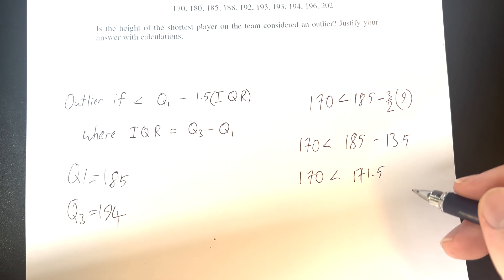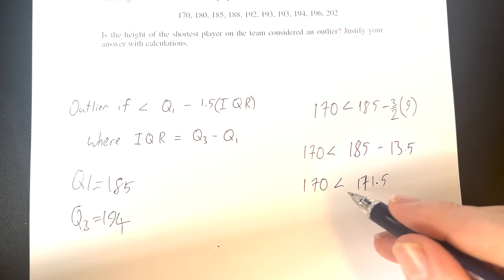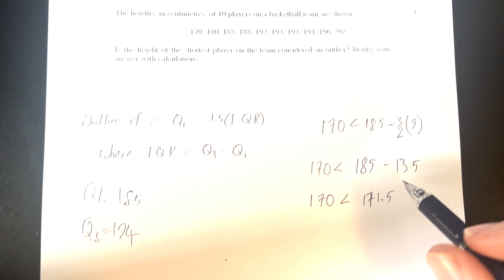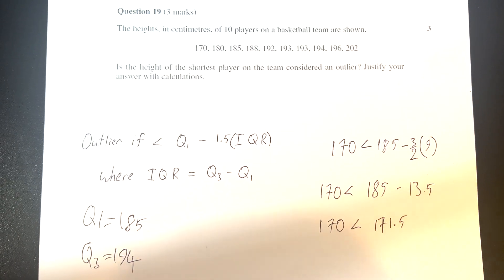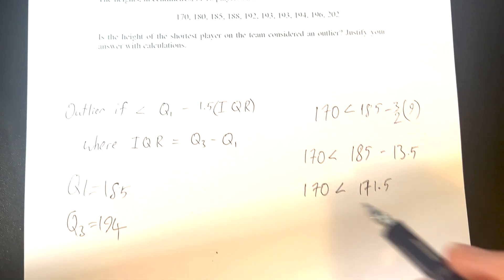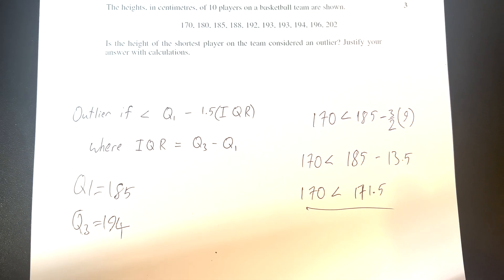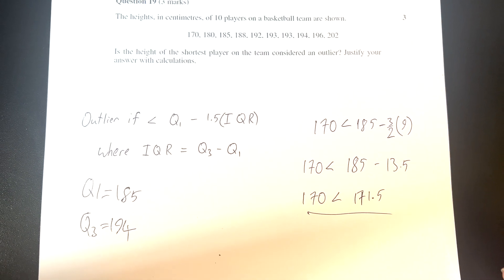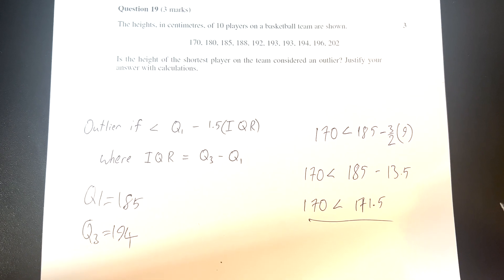We see that since 170 is less than 171.5, we can say that yes, this person is considered an outlier. So we've used our calculator to determine our different quartiles and effectively answer this question.